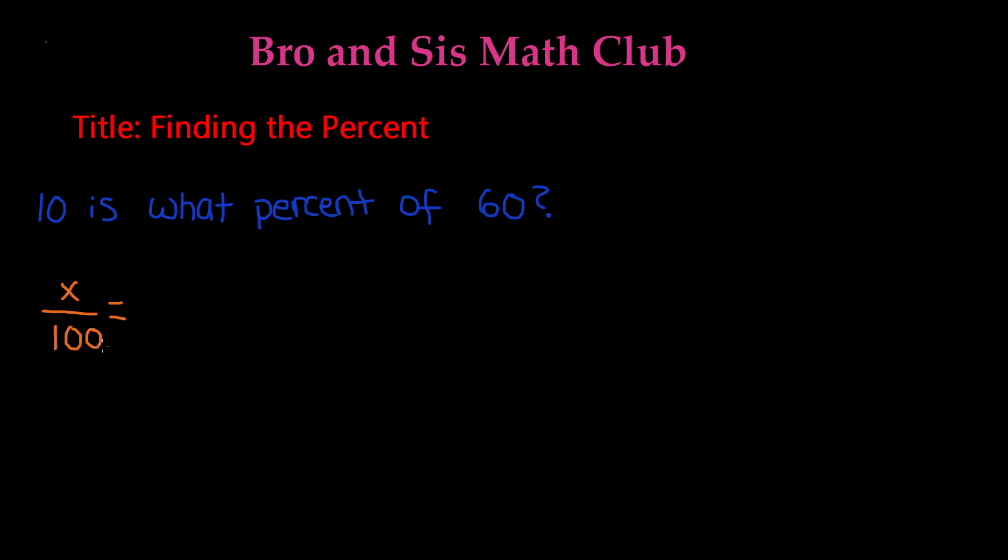In a proportion, they are equal to one another, so we're going to put an equal sign. Our next fraction is going to be is over of. We can determine which is going to be the is and which is going to be the of by looking at the keywords. It says 10 is what percent of 60. So it's already telling us that 10 is going to be the is and 60 is going to be the of. So remember, it's is over of, so it's going to be 10 over 60. And there we have it, our proportion.